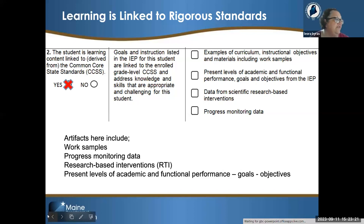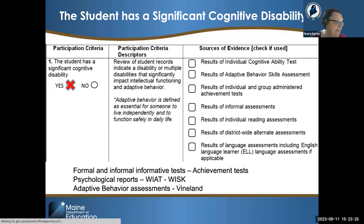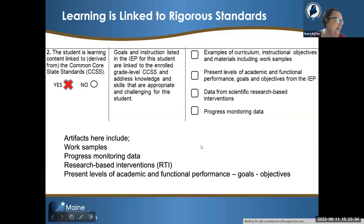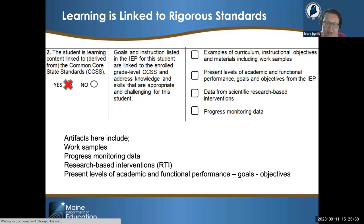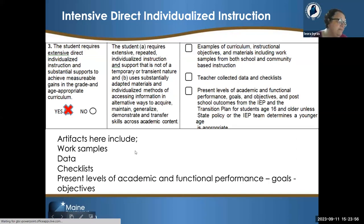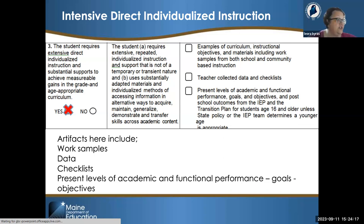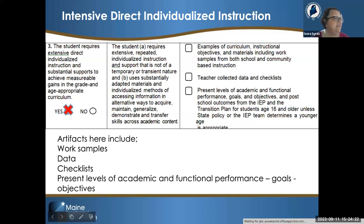The slides go through the first three sections. Examples for section one include achievement tests, a WISC, and a Vineland — all data-driven assessments and evaluations. For section two, you could look at work samples, progress monitoring data, research-based interventions, the RTI process, and present levels — the student's current academic and functional performance. For section three, the extensive direct individualized instruction and support piece, the team could look at work samples, evaluation data, classroom checklists, present levels of academic and functional performance goals and objectives. All of these are data-driven.